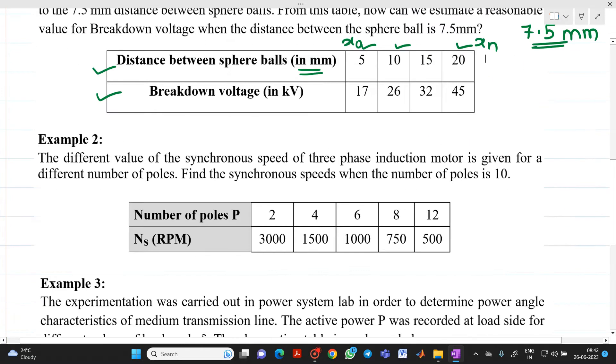Second example, suppose number of poles and the synchronous speed of induction motor has been given to us and if we want to find out what will be synchronous speed if number of poles are 10, then we will be easily find it out with the help of interpolation.